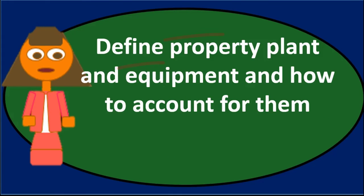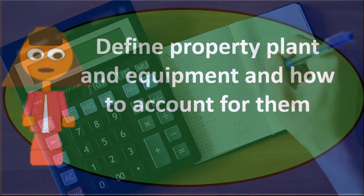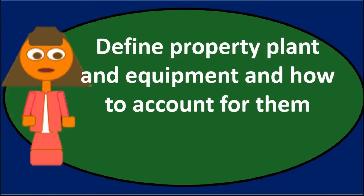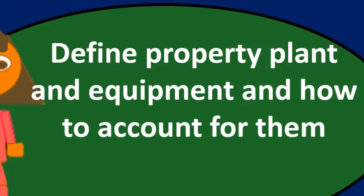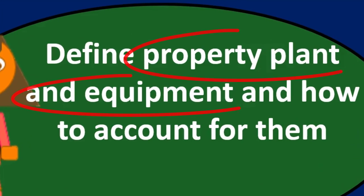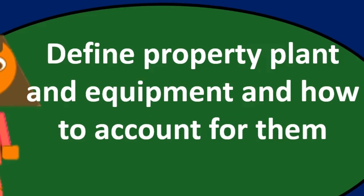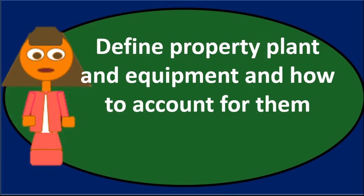Those are the major components when dealing with property, plant and equipment: it goes on the books as an asset, we record depreciation over its useful life, and then we record the sale or disposal of the property, plant and equipment at some point.